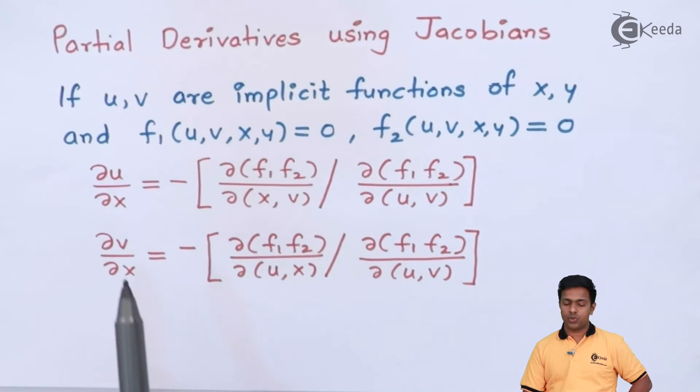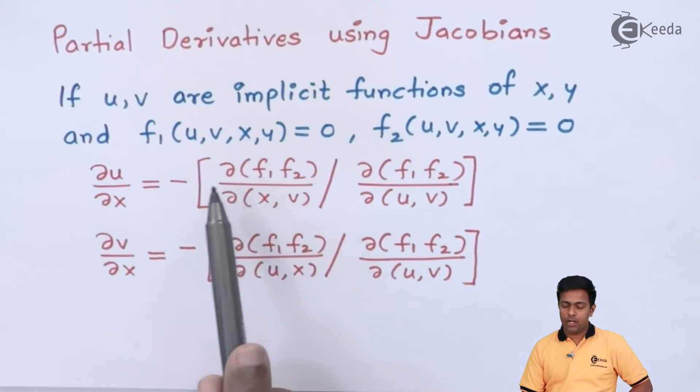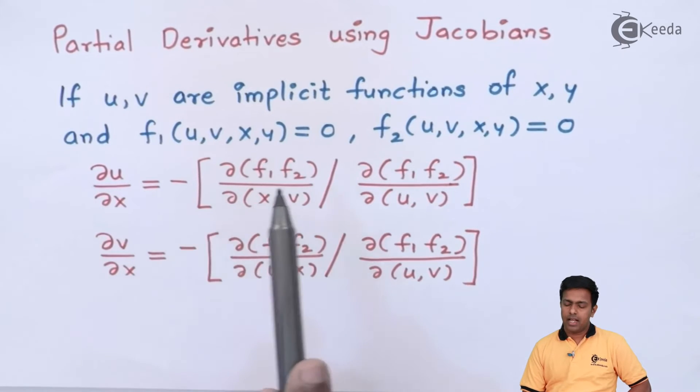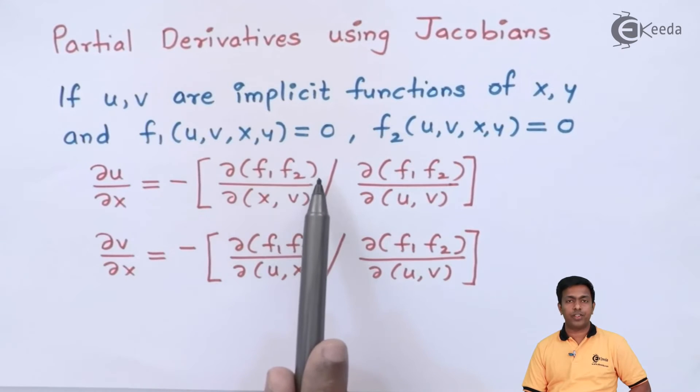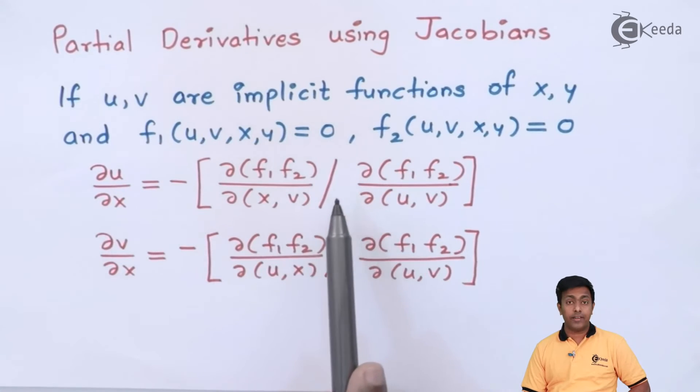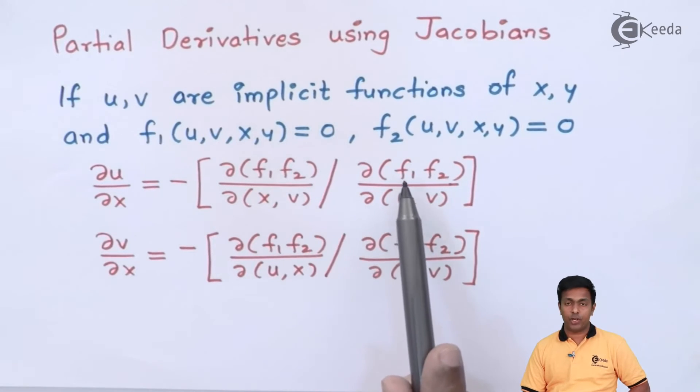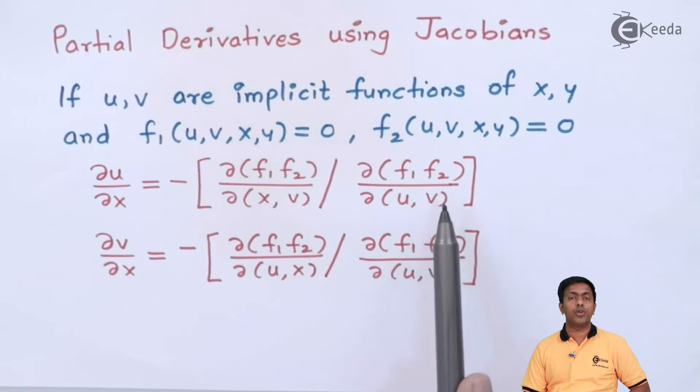So since u and v are the implicit function, the formula is ∂u/∂x = -[∂(f1,f2)/∂(x,v) / ∂(f1,f2)/∂(u,v)].